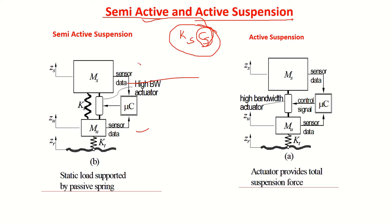In a semi-active suspension, a set of sensor systems predicts the road condition and when the vehicle will encounter an obstacle. This information is sent to a microcontroller, which according to its program logic makes a decision on what the damping value should be and changes the damping coefficient of the shock absorber. That is what happens in a semi-active suspension system — it does not work on spring stiffness.